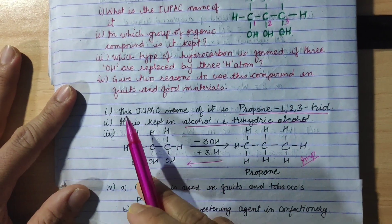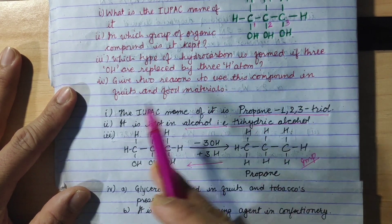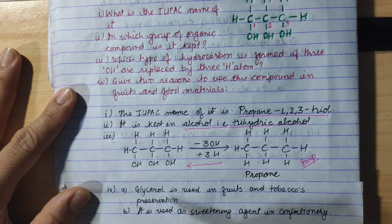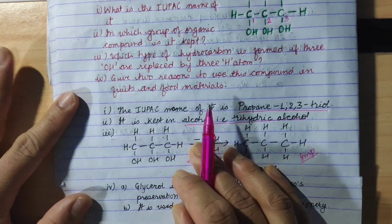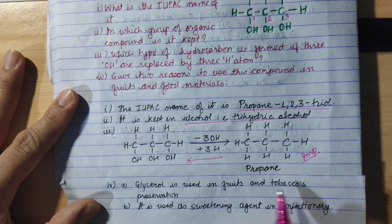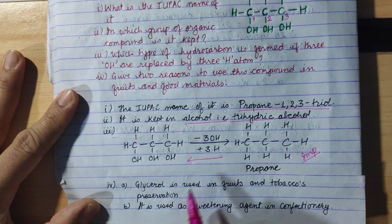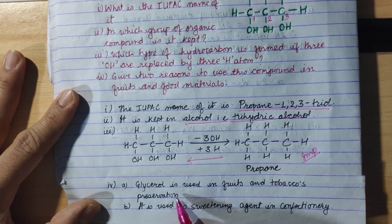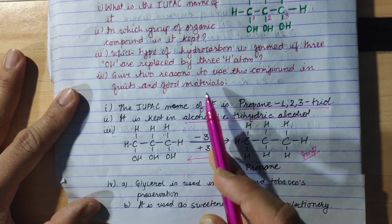Give two reasons to use this compound in fruits and food materials. Now first, glycerol is used in fruits and tobacco preservation.